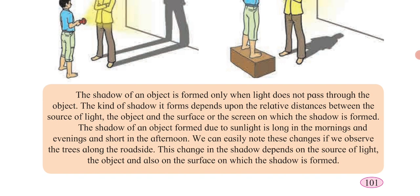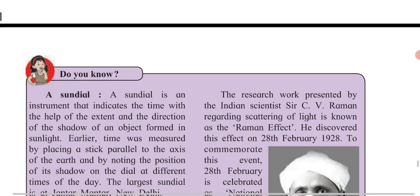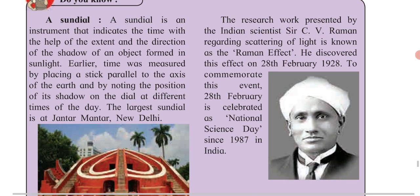We can observe changes in shadows in the morning, afternoon, and evening — this depends on the position of the sun. When you are walking on the road, you can tell where the sun is by looking at where your shadow falls. The sundial is an instrument that was used earlier to determine the time based on the formation of shadows. The largest sundial is at Jantar Mantar in New Delhi.